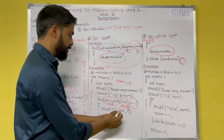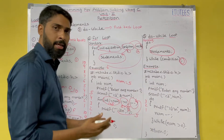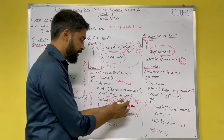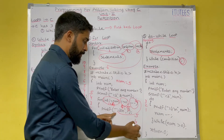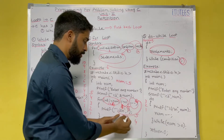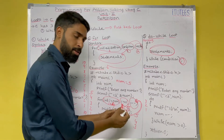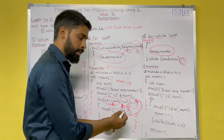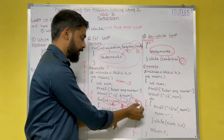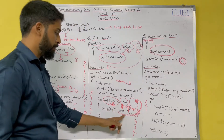With I = 5 and 5 > 0 true, we print I (prints 5), then control goes to updation: I-- makes I become 4. Again condition 4 > 0 is true, print 4, I-- gives 3. Condition 3 > 0 true, print 3, I-- gives 2. Condition 2 > 0 true, print 2, I-- gives 1. Condition 1 > 0 true, print 1, I-- gives 0. Now 0 > 0 is false, so the loop breaks.